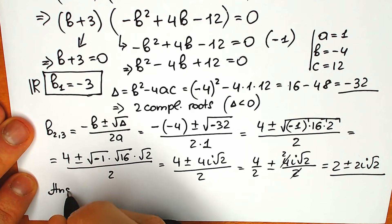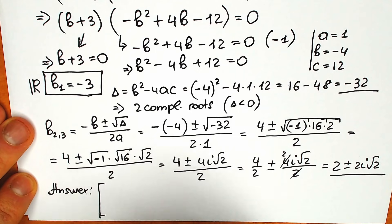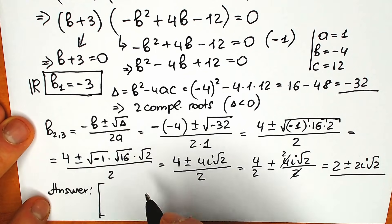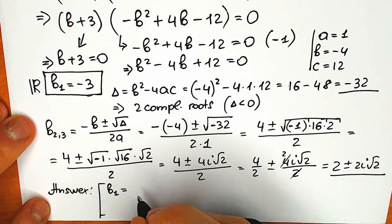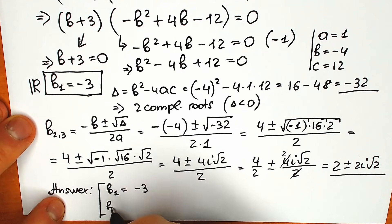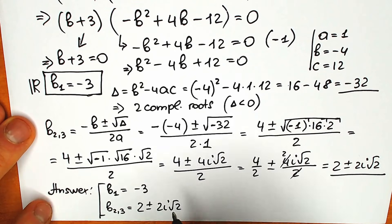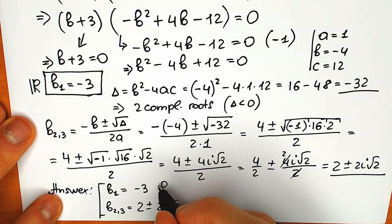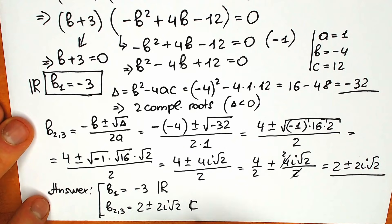Let's gather all the roots together and write our final answer. b₁ equals minus 3 — this is our real number root. And b₂,₃ equal to 2 plus or minus 2i√2 — these two are our complex roots.